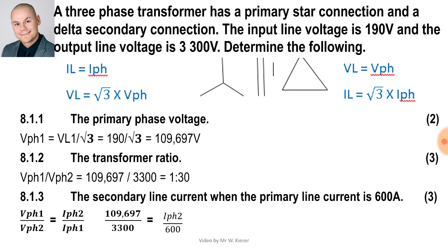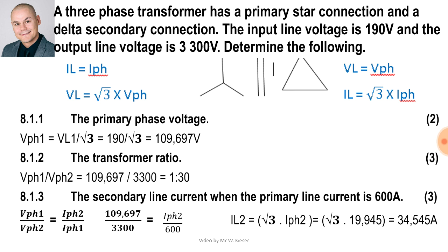A little bit of cross multiplication gives us the secondary phase current of 19.945 amps. To calculate the secondary line current on the secondary side: IL2 equals square root three times I phase two, and that gives us 34.545 amps.